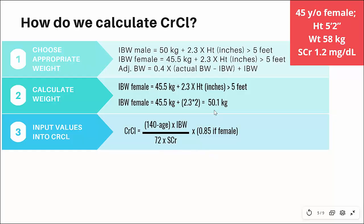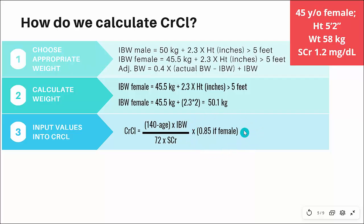The next step is to input all the values into the creatinine clearance equation. You have a space for age, weight — for which we use the ideal body weight — and the serum creatinine. The last thing to consider is whether the patient is male or female. If they are female, you multiply by 0.85; if not female, you delete that portion of the equation.